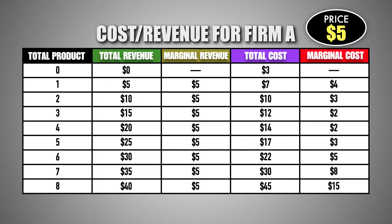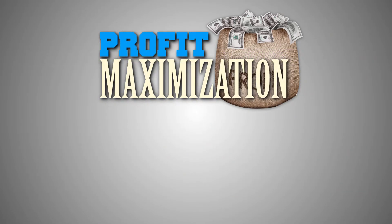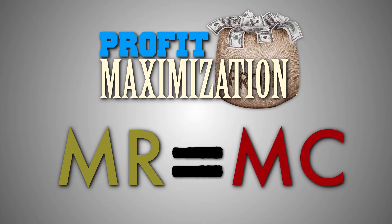From here, we can analyze the marginal revenue and marginal cost of each unit of good M to find a profit-maximizing level of output for this firm using the Optimal Output Rule. According to this rule, a firm will maximize its profits by producing a quantity of output where the marginal revenue of the last unit produced is equal to its marginal cost. It's actually pretty simple when you think about it.